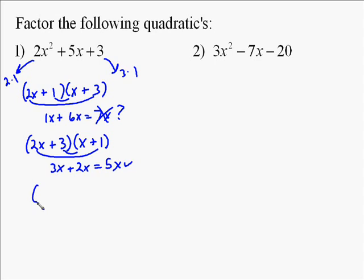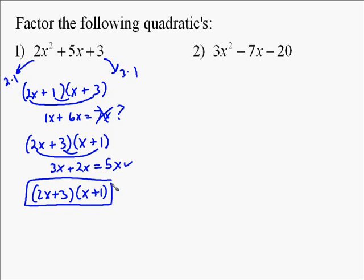So our solution is (2x + 3)(x + 1), because 2x times x is the 2x squared, we showed the 5x, and 3 times 1 is 3.